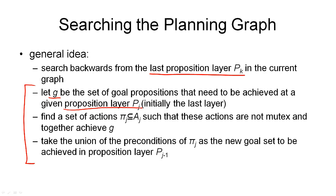And what we do to achieve these propositions in layer PJ is to look for a set of actions, Pi J, that are a subset of the actions in layer AJ. So that's the layer before PJ. And of course, the actions that we're looking for must together achieve all the conditions in G, and they must not be mutex.